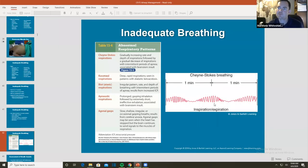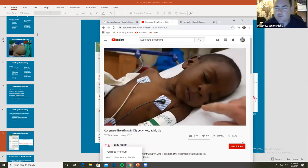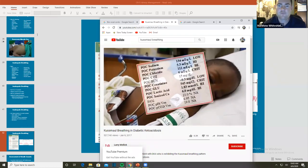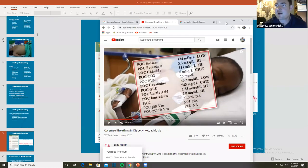Next one, Kussmaul. Kussmaul respirations is deep, rapid breathing that you see in diabetic ketoacidosis. So the kid's unresponsive right now. He's got this deep breathing that you see. Alright, let's talk about that.